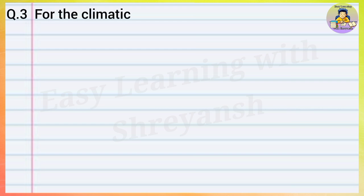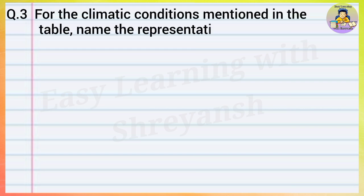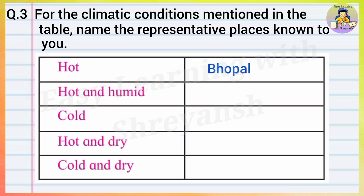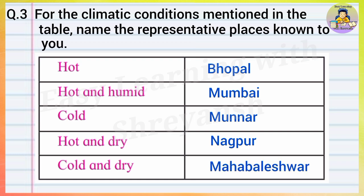Question number three: For the climatic conditions mentioned in the table, name the representative places known to you. Hot - Bhopal. Hot and humid - Mumbai. Cold - Munnar. Hot and dry - Nagpur. Cold and dry - Mahabaleshwar.